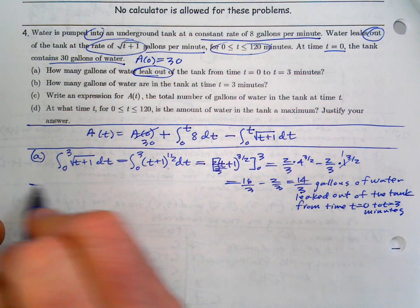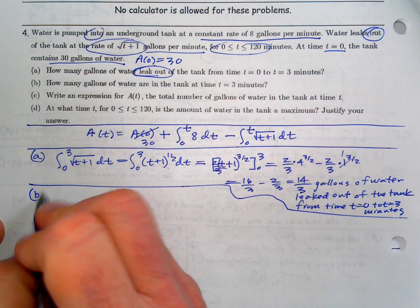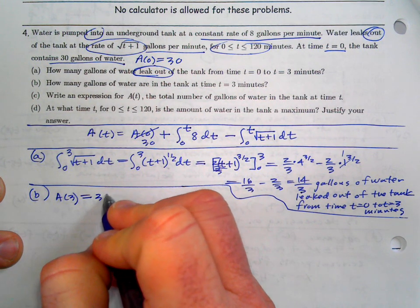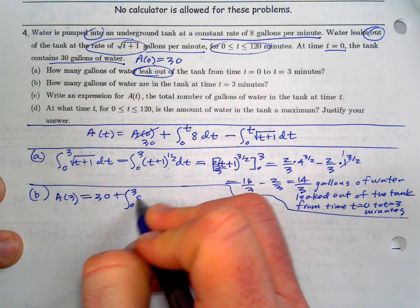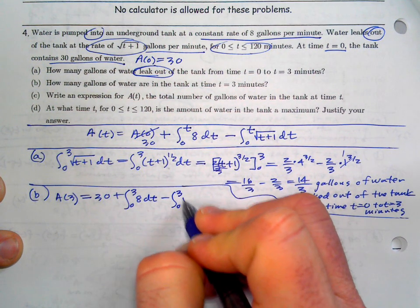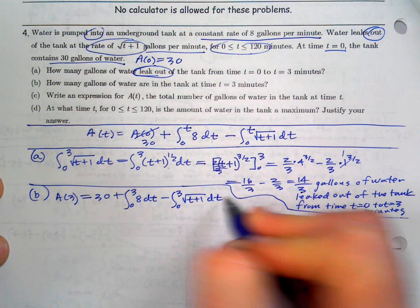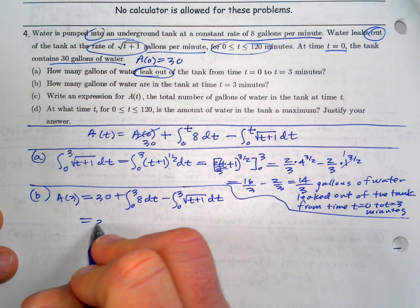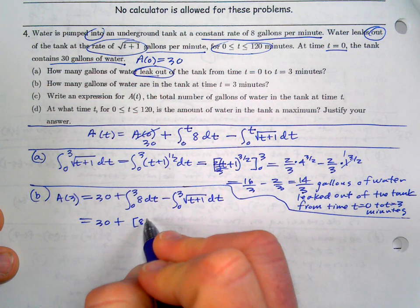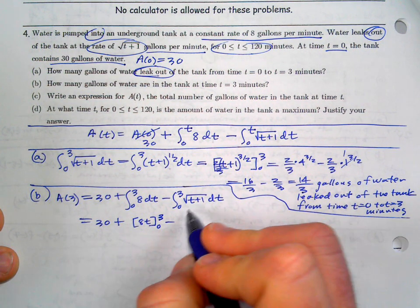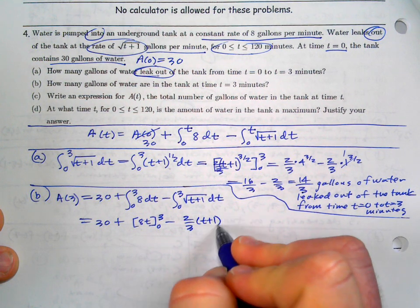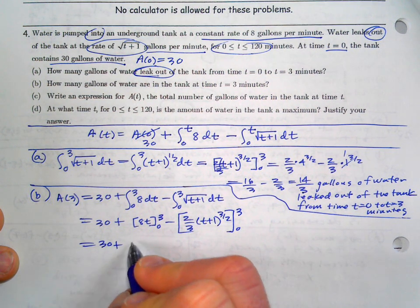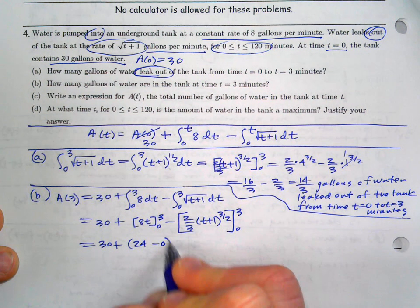Part b asks how many gallons are in the tank at t=3, so we want A(3). Using the rate model: A(3) = 30 + integral from 0 to 3 of 8 dt − integral from 0 to 3 of √(t+1) dt. Write that setup down. The antiderivative of 8 is 8t, and for the leak term we already found (2/3)(t+1)^(3/2) from 0 to 3.